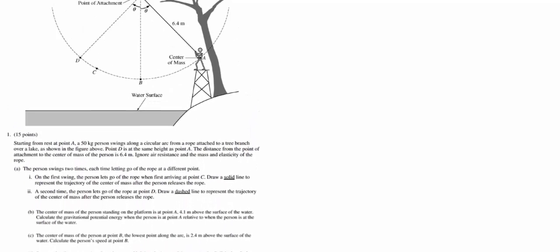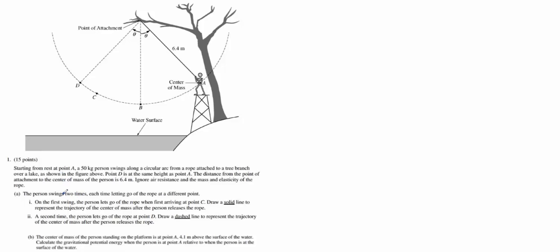Let's start it off. On the first swing, the person's going to swing back and forth two times, each time letting go at a different spot. On the first swing, the person lets go of the rope when they arrive at point C. When they're swinging, they start off here at point A with potential energy. They're going to get to this bottom spot with their maximum kinetic energy. It's where they're going the fastest. They start to slow down until they get all the way over here to point D, where it's once again only potential energy.